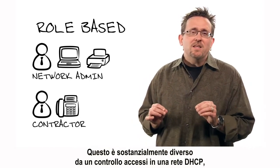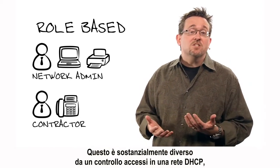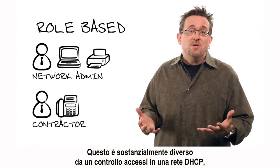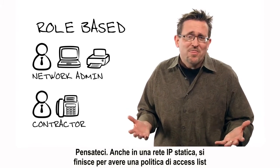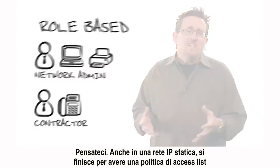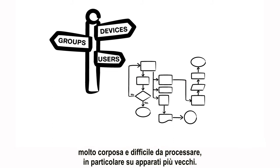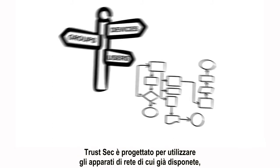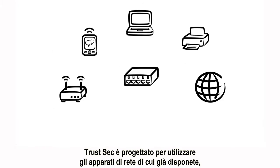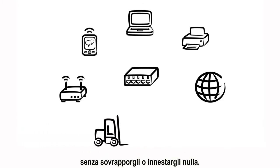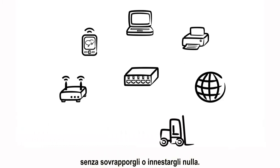This is fundamentally different than access control in a DHCP network, which can be very difficult. Even in a static IP network, we can end up with huge access control lists that are difficult to process, especially on older gear. TrustSec is designed to use the network devices you already have, not ask you to forklift or bolt something on.